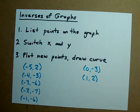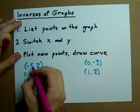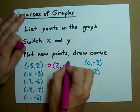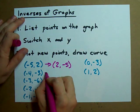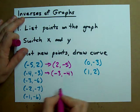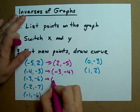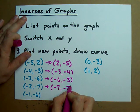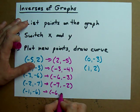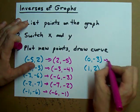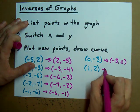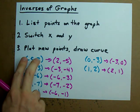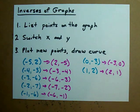Switch x and y in each of those points. So (-5, 2) becomes (2, -5). (-4, -3) becomes (-3, -4). (-3, -6) becomes (-6, -3). (-2, -7) becomes (-7, -2). (-1, -6) becomes (-6, -1). (0, -3) becomes (-3, 0). And (1, -2) becomes (2, 1). See how we switched x and y in each of these? That's how you do it.